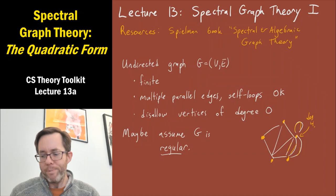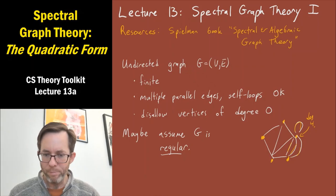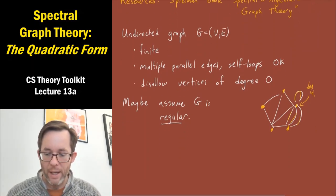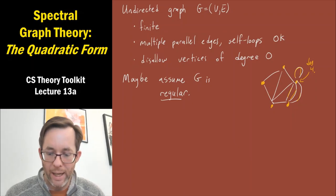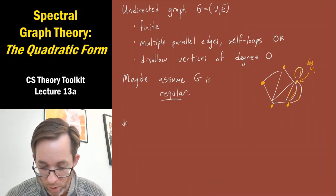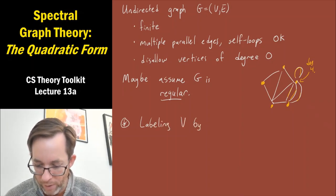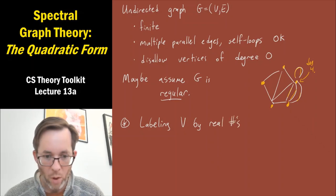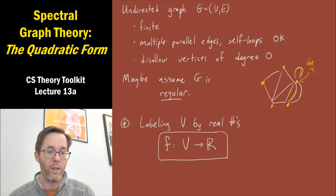You can generalize spectral graph theory to infinite graphs, directed graphs, or reversible Markov chains, but we'll stick with undirected graphs for the remainder of these lectures. The main object we're going to be studying is labelings of the graph vertices by real numbers. A key thing we'll be studying is labelings of vertices of V by real numbers, and we may think of these as functions mapping the vertex set V into the real numbers. This will be a central object of study for us given an undirected graph.